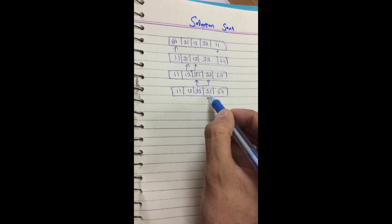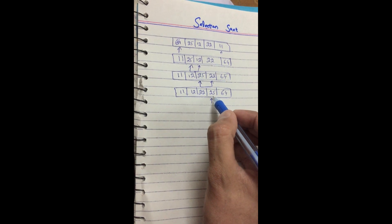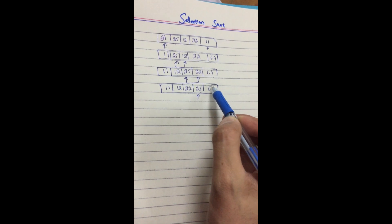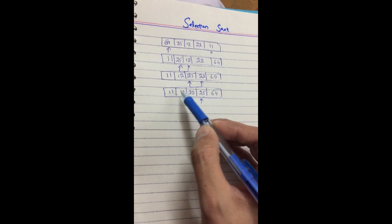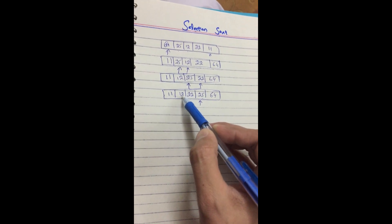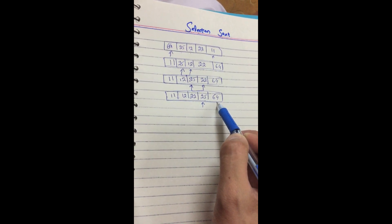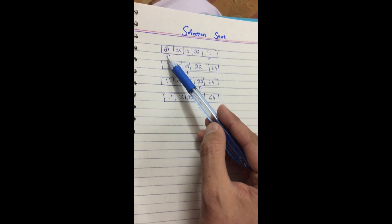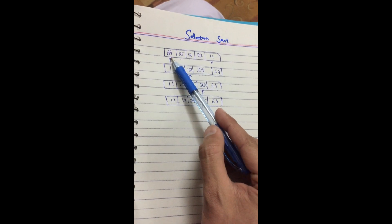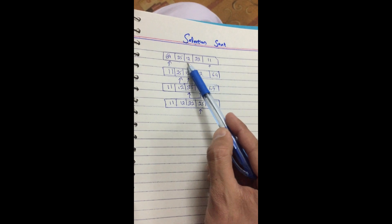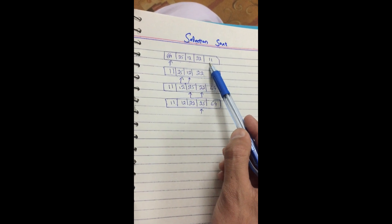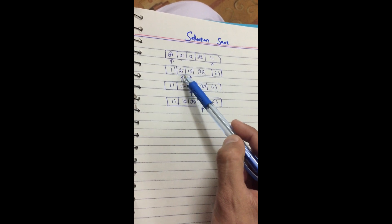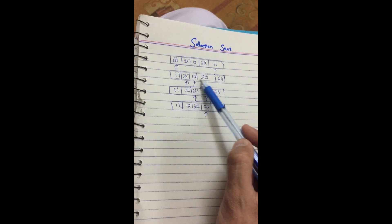Now our counter is at the next position. We check 25 and 64 and find 25 is already the minimum, so no swap is needed. The whole array is now sorted: 11, 12, 22, 25, 64. In selection sort, we start at index 0, find the minimum value throughout the array, place it at the leftmost position, then move the counter to the right.